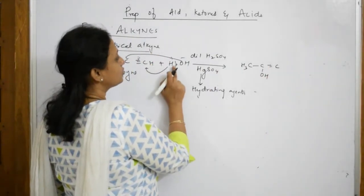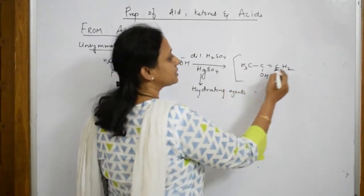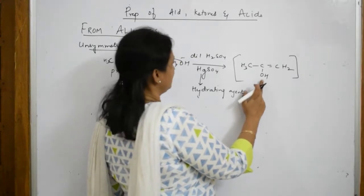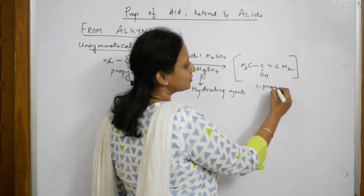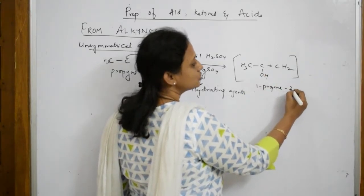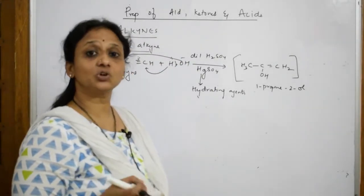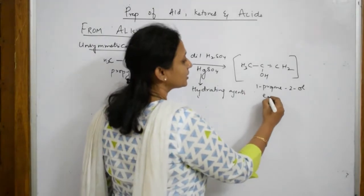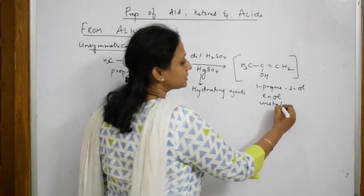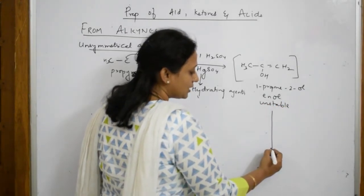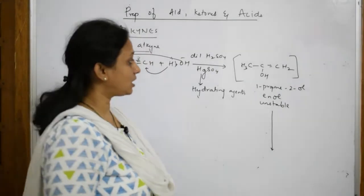Now the CH₃ group is on one side, the OH is attached giving a double bond still existing, and one more H is added making CH₂. This compound formed is called an enol — specifically 1-propen-2-ol. This is a very unstable compound called enol.